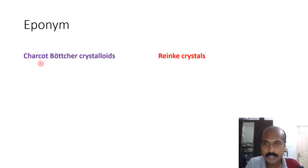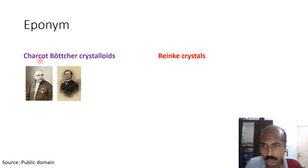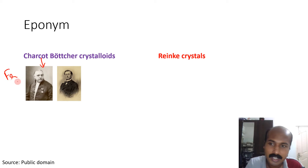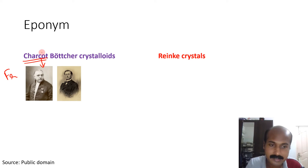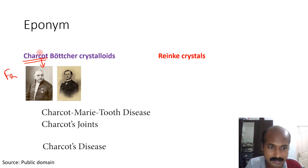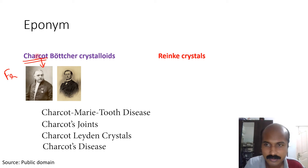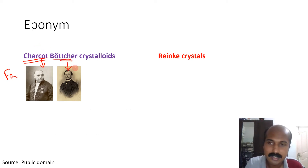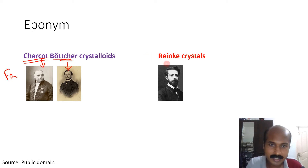Charcot-Böttcher has the names of two scientists. Charcot is a French neurologist and anatomic pathologist. You may come across many eponymous names related to Charcot — for example, Charcot-Marie-Tooth disease, Charcot's disease, Charcot's joints, and Charcot-Leyden crystals. Böttcher is a Baltic German pathologist.